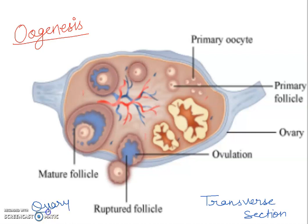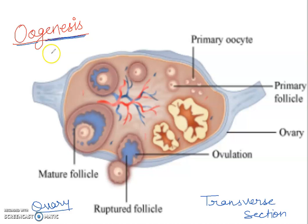I am going to explain oogenesis — 'genesis' means to form or formation, and 'o' means ova. So oogenesis is the development of ova, and I have made a picture to show you the location of the ovary.